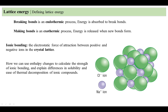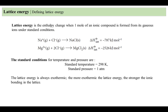Ionic bonding is a bond made between a negatively charged anion and a positively charged cation, and the electrostatic forces are what attract those two ions together to make a bond. The lattice energy is the enthalpy change when one mole of an ionic compound — a salt — is formed from its gaseous ions under standard conditions.